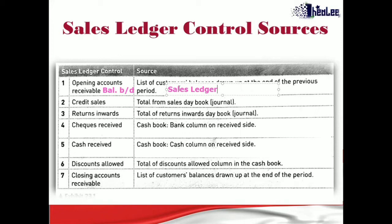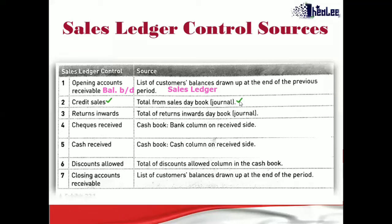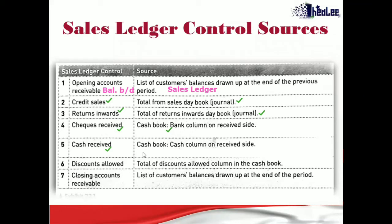The next source item is credit sales, which you pick up from your sales journal, since the purpose of the sales journal is to record all sales made on credit. Return inwards — the total return inwards — can be found in the returns inwards day book. Checks received from debtors can be found in the cash book by looking at the bank column for the total of checks received from debtors.